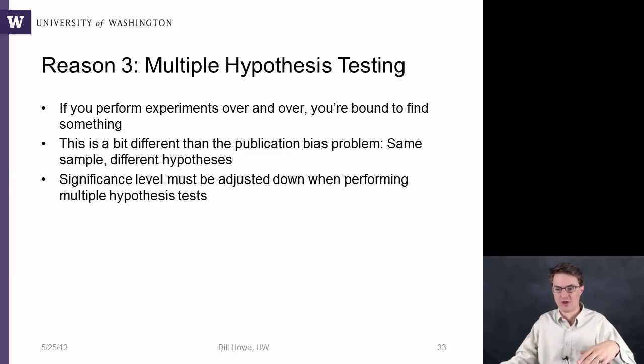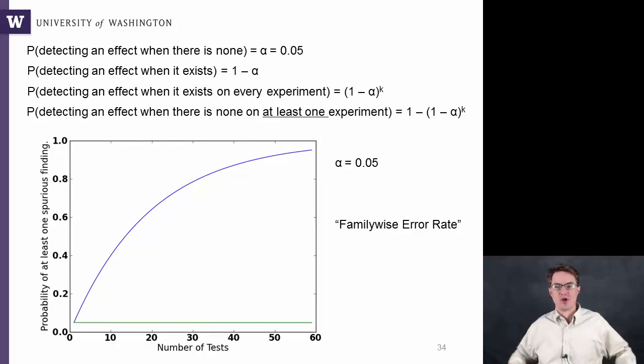To understand why, consider something pretty basic over completely random data. We set the threshold at 0.05, this alpha = 0.05, so the probability of detecting an effect where there is none is 0.05. Then the probability of detecting an effect when it exists is 1 minus alpha. The probability of detecting an effect when it exists on every experiment you do, out of k experiments, is (1 - α)^k.